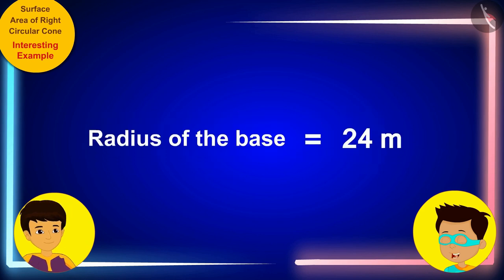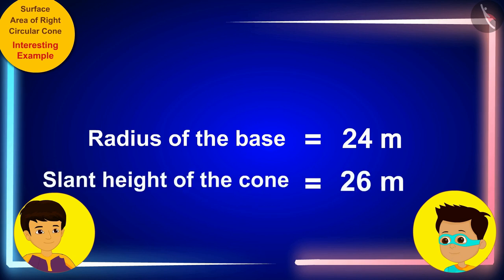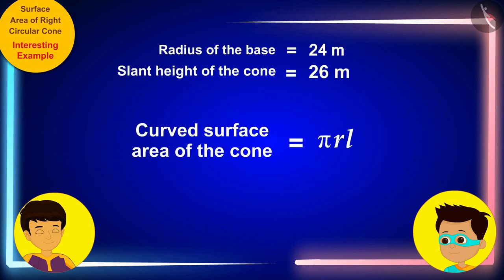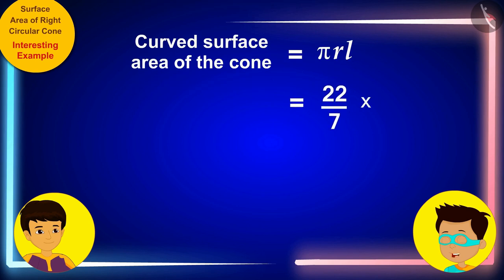Hey wow Manas, let us now use the radius of the base of the tent, 24 meters, and its slant height of the cone, 26 meters, that we just found in the formula for the curved surface area of this cone instead of r and l respectively. Let's see what we get.